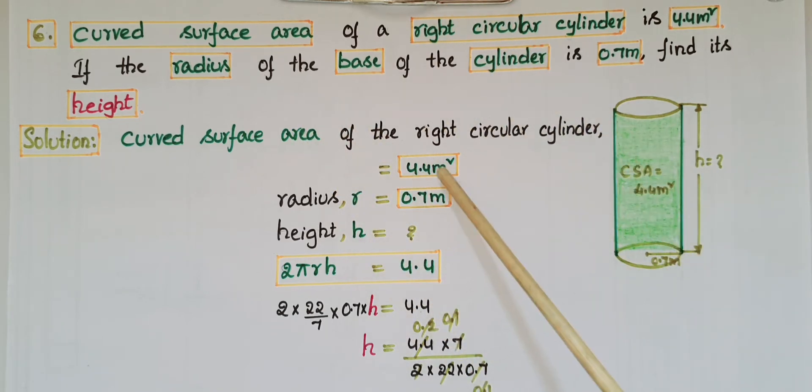Curved surface area of the right circular cylinder is given, that is 4.4 meter square. Radius of the base is 0.7 meters. Here we have to find h value. Curved surface area of the right circular cylinder is 2πrh, that is given as 4.4. So 2 into π value, 22 by 7, into r is 0.7, into h equals 4.4.